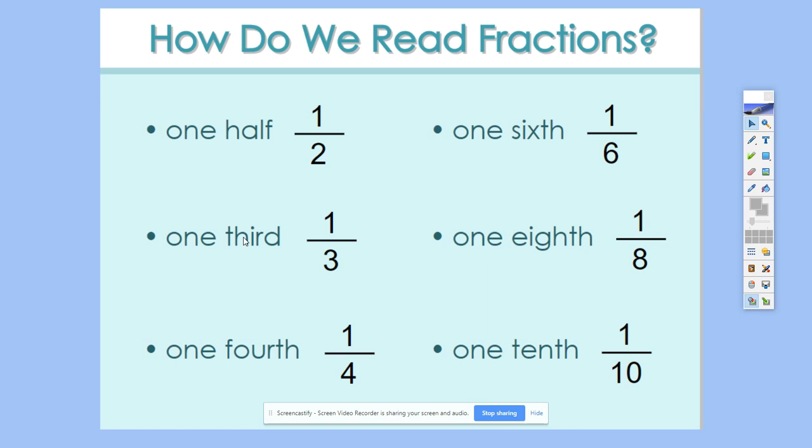So how do we read some fractions? Well, in order to read fractions, this is one-half, one-third, one-fourth, one-over-fourth, one-sixth, one-eighth, one-tenth. These are all basic unit fractions. They have a one in the numerator. We could totally change this, though, at any time. We could have said three-eighths, and then we could have wrote three over eight.